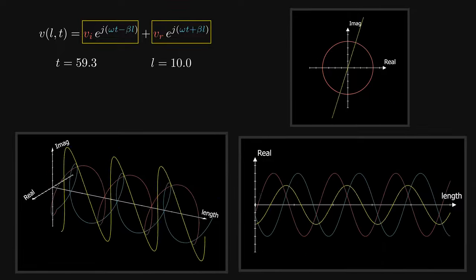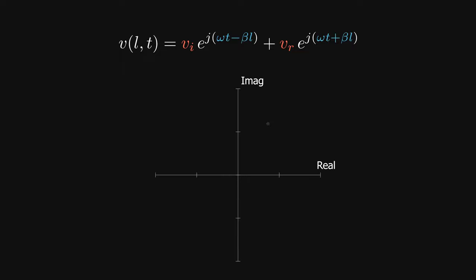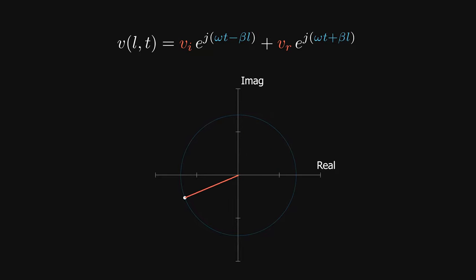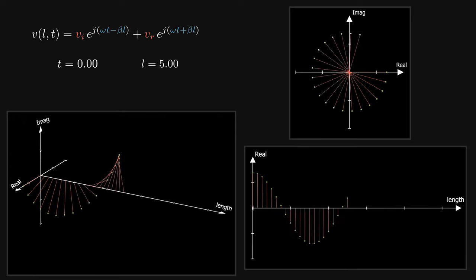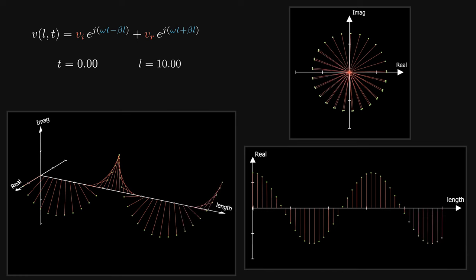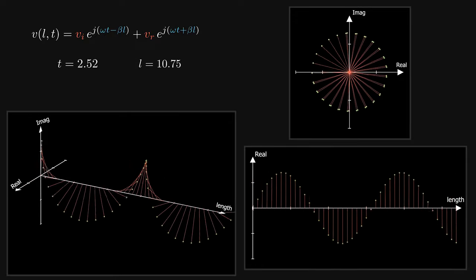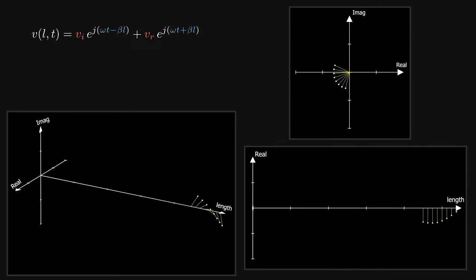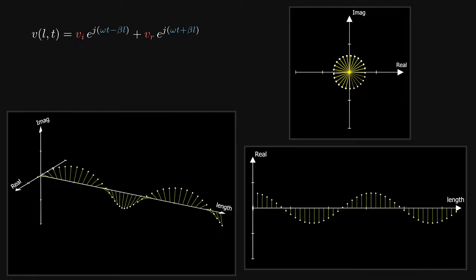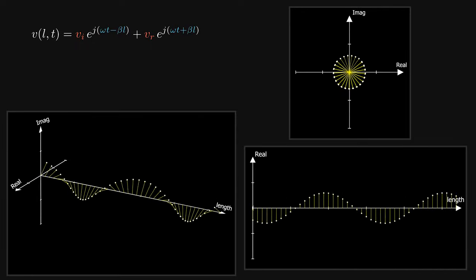We can look at this standing wave phenomenon from another perspective. A complex exponential function is just a rotating vector in a complex plane. The forward-traveling wave is a vector whose phase angle depends on time as well as the location on the line. At t equals zero, the forward-traveling wave at each point is a vector with constant magnitude and phase angle that depends on that location. As time goes on, the vectors along the line rotate with constant speed omega, and the forward-traveling wave moves from the source toward the load. Similarly, the backward-traveling wave moves in the opposite direction.